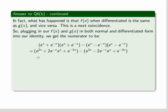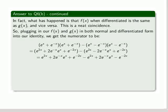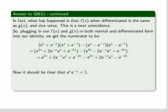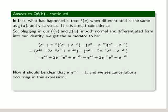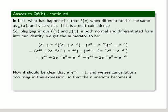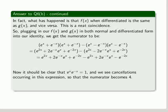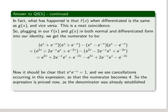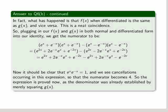And then we have to expand that out. Simple exercise in expansion and multiplying carefully. It should be clear that e of x multiplied by e of x minus x equals 1. We see cancellations occurring in this expression. And the answer, it should simplify to 4. So the expression is proved now as the denominator was already established, which was merely squaring g of x. So we move to part c.